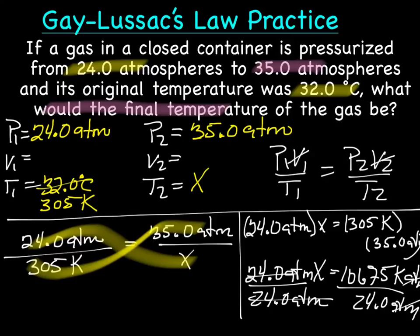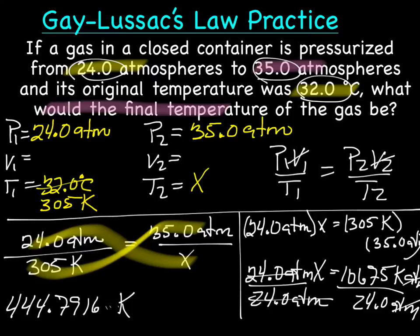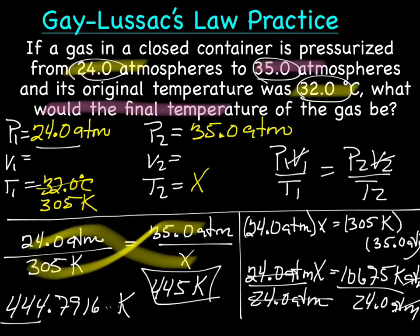And that gives us 444.7916 and so forth Kelvin. Let's check ourselves to make sure our pressure started out from 24, ended up at 35, which means pressure increased, which means temperature should also increase. And we have 305K and ended up with 445K, so looks like we did it right.